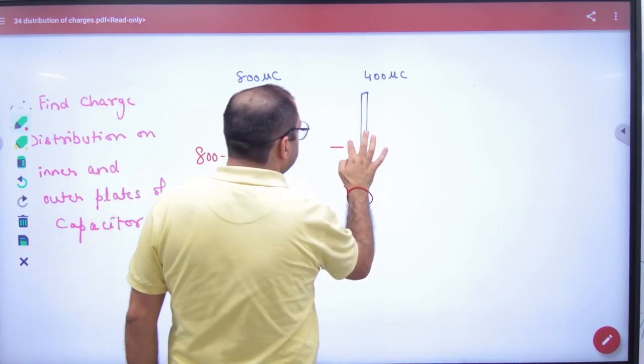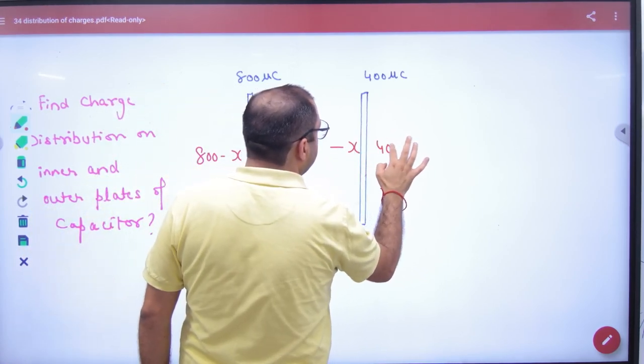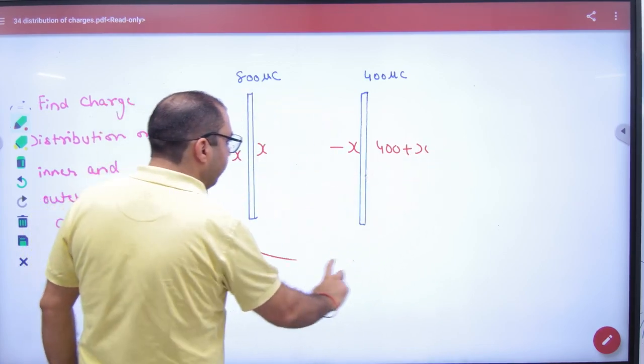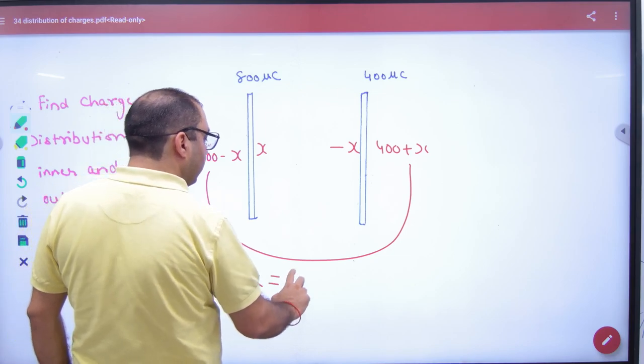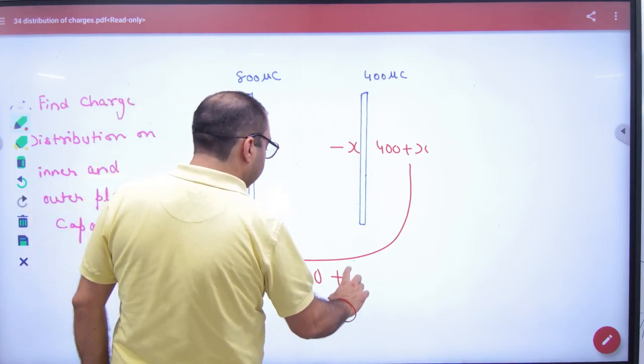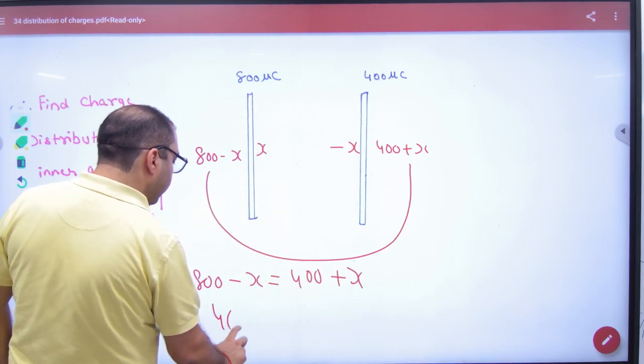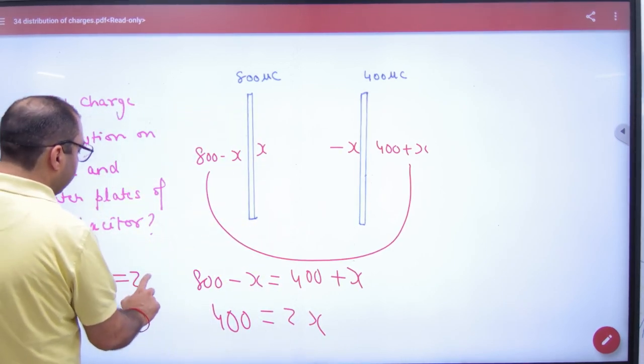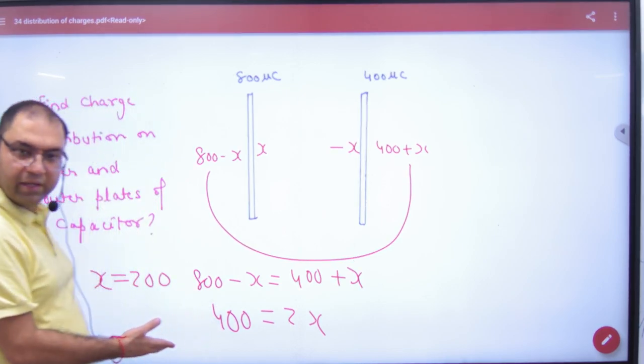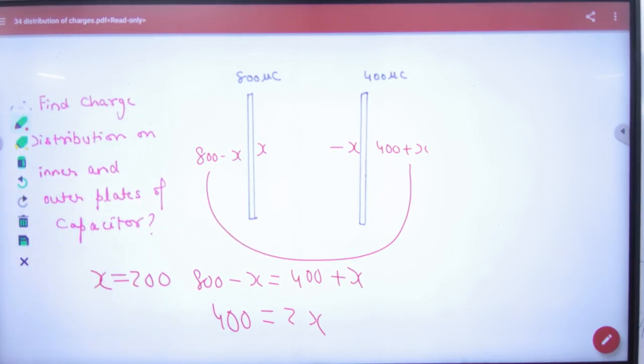This is minus x. So this is 400 plus x. Equate it. 800 minus x is equal to 400 plus x. This will be 400 and on the right side will be 2x. So what's the value of x? 200. So what is the answer? 200 was coming.